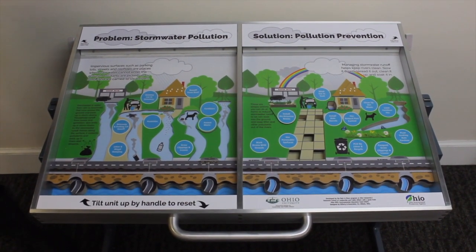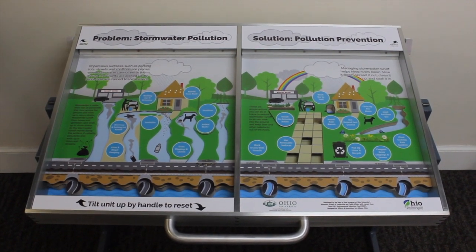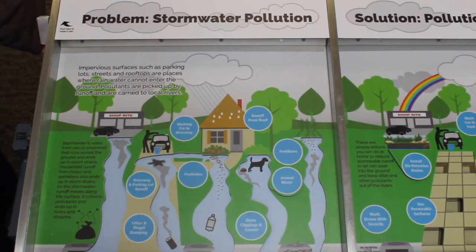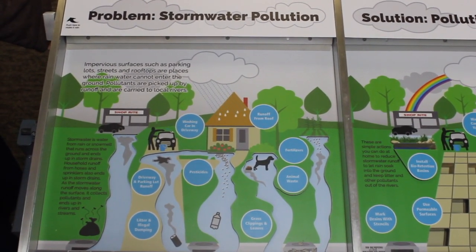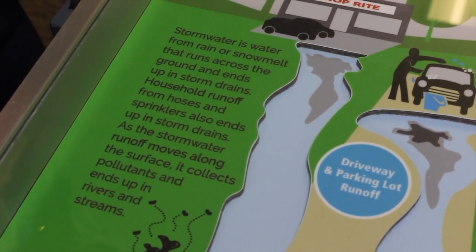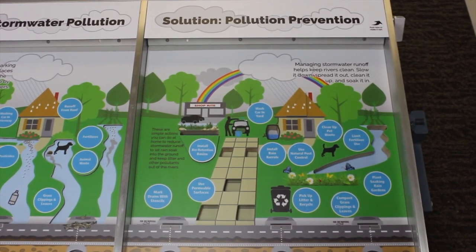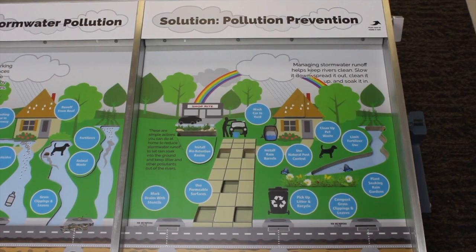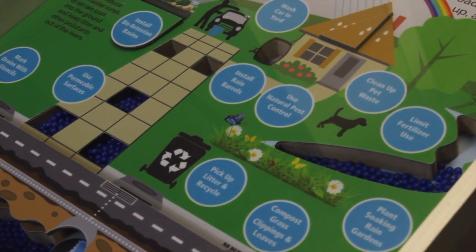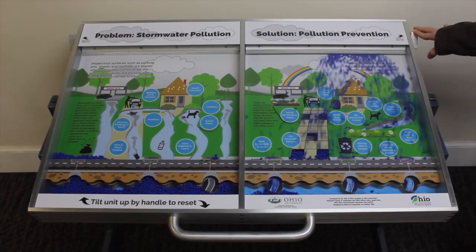The exhibit itself is showing stormwater best management practices. On one side of the exhibit you'll see what is typical for how stormwater is managed or not managed within our communities and in our neighborhoods, and then on the other side are solutions to stormwater management that would be preventing pollution to our streams and rivers. The exhibit is interactive and self-guided.